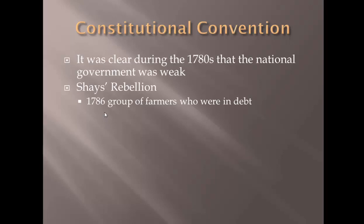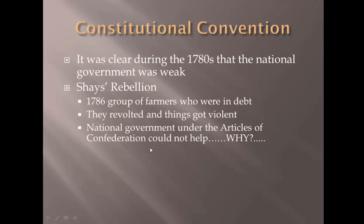In 1786, Daniel Shays represented a group of farmers who were in fact in debt. He would be their leader. They did revolt, and things got pretty violent. He shut down a lot of courthouses and was attacking the establishment of Massachusetts. It got pretty bad. The state of Massachusetts went to the national government for help.